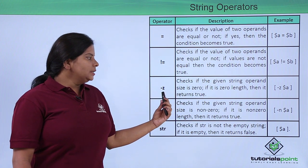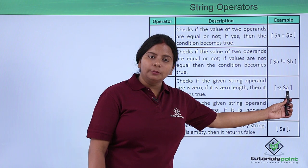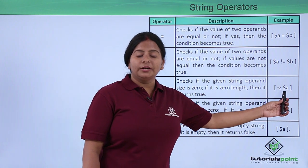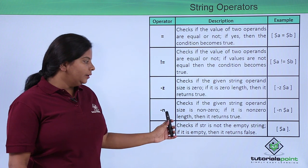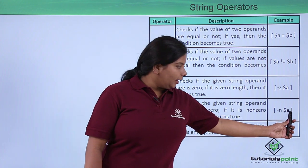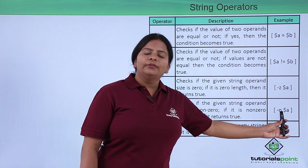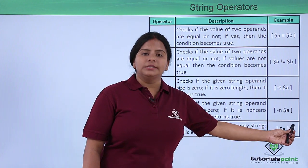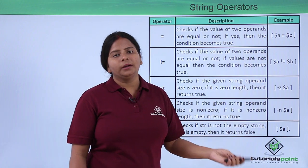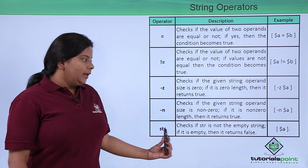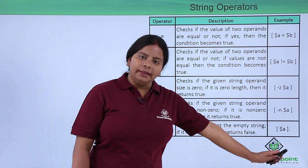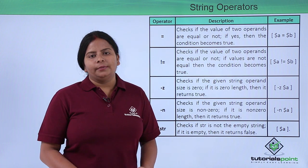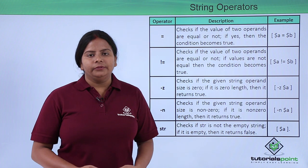Next we have hyphen-Z. Hyphen-Z checks whether the value of a variable is zero or not — if it is zero the result is true, if it is not zero the result is false. Then we have hyphen-N, which checks whether the value is nonzero, meaning the variable is not zero — it can be one, two, or any number above zero. Then we have 'str', which checks for an empty string where nothing has been assigned to the variable.